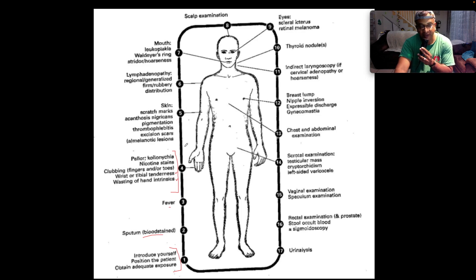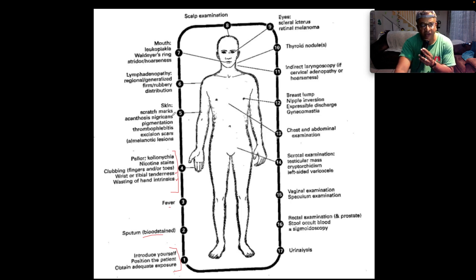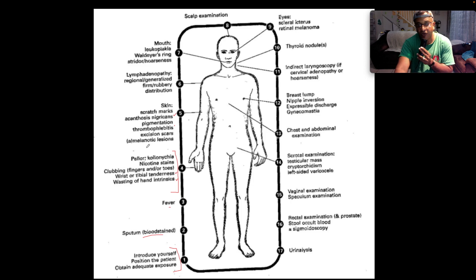Examine the skin, usually of the forearms, which are nice and exposed — look for scratch marks. Look for acanthosis nigricans, especially at the nape of the neck or in the axillary skin folds. Also note migratory pigmentation, thrombophlebitis, excision scars. Look also for any melanotic lesions or even amelanotic suspicious lesions on the skin.